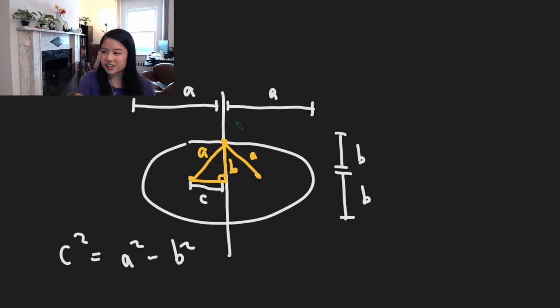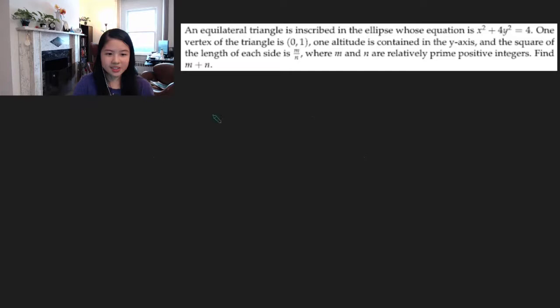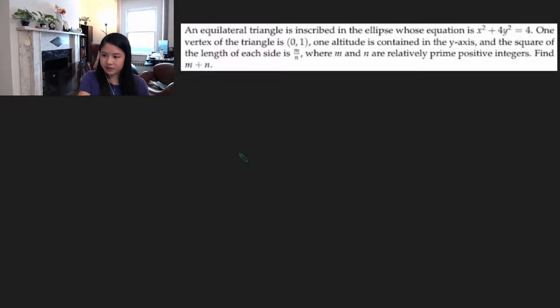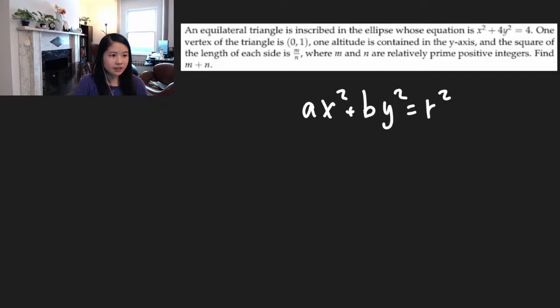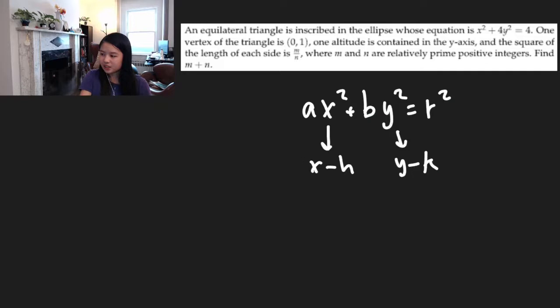There's also one really important property about tangency — something cool happens when you have a line that's tangent to an ellipse, but I'll go over that later. For now we're going to start with a problem from 2001 AMC. It has an equation of an ellipse, so we need to think about what equations of ellipses mean. The general form is ax² + by² = r², where a, b, and r are constants. If the ellipse is not centered at the origin it might be x minus h and y minus k, but this is the general form.